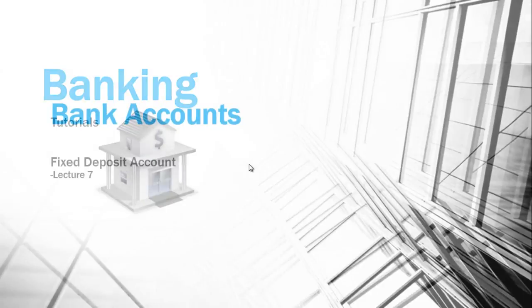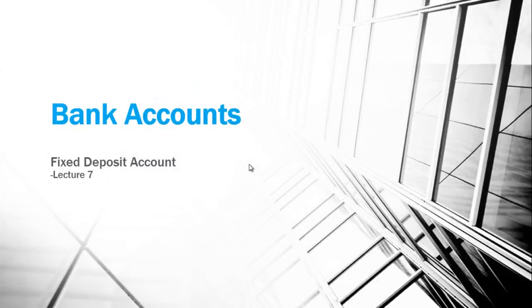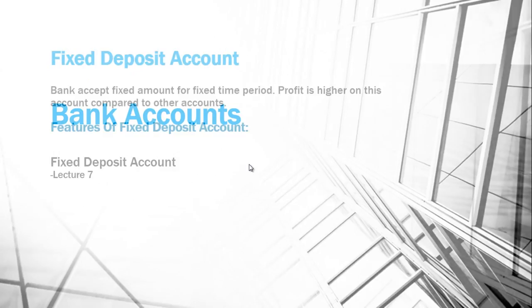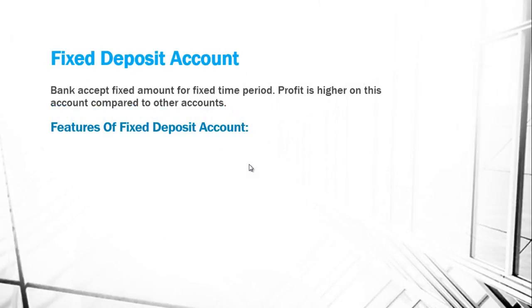This is our seventh lecture on banking and our topic is bank accounts. Today we are learning about fixed deposit accounts. A fixed deposit account is one where the bank accepts a fixed amount for a fixed time period, and the profit is higher on this account compared to other accounts.